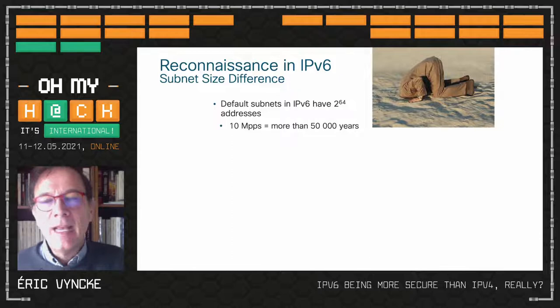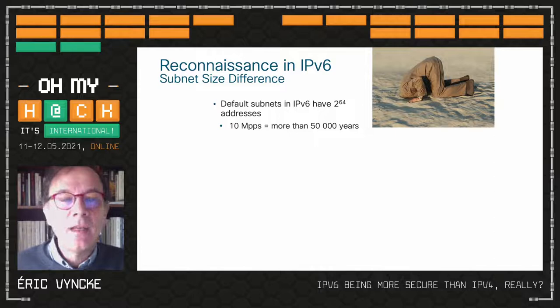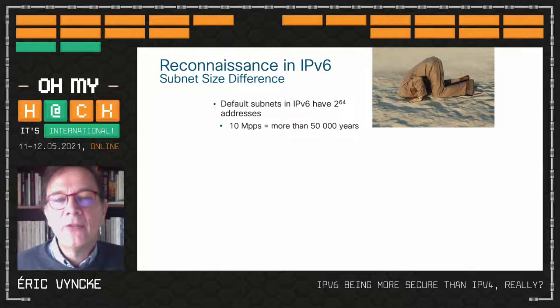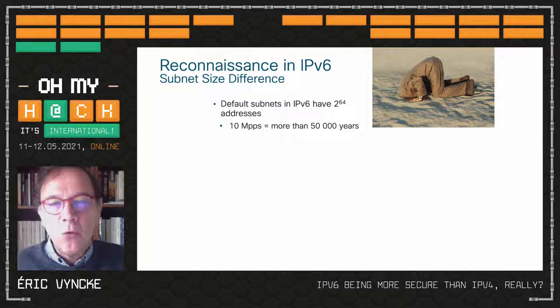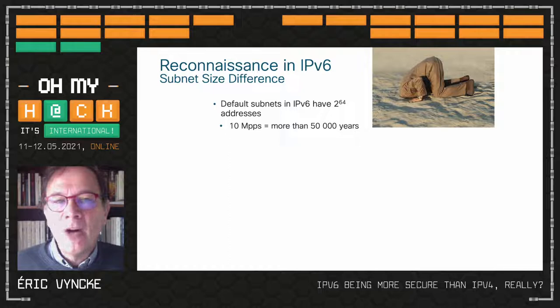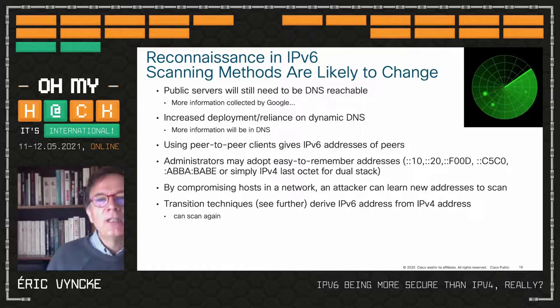Another myth: each LAN or VLAN has 2 to the power of 64 addresses. If an attacker wants to do reconnaissance by scanning, even sending 10 million packets per second it would take 50,000 years. And with privacy extensions, IPv6 addresses change every day — pretty useless. But people believe 'security by obscurity means I cannot be found so I'm safe.' We all know of course that security by obscurity is just a dream.